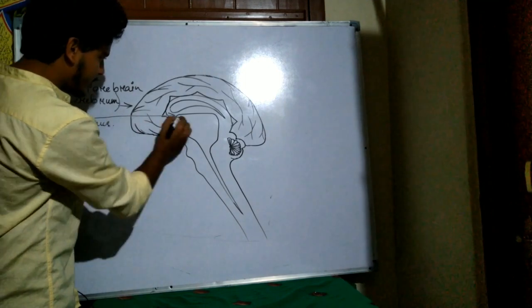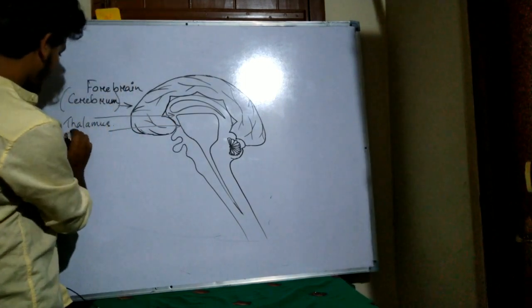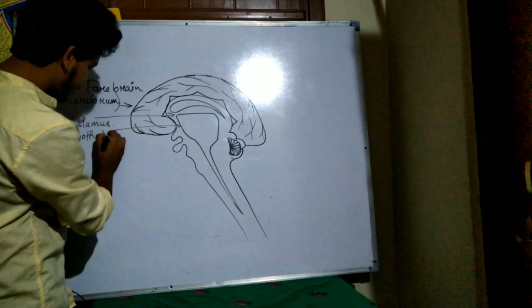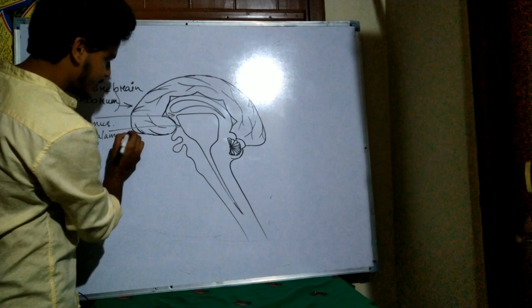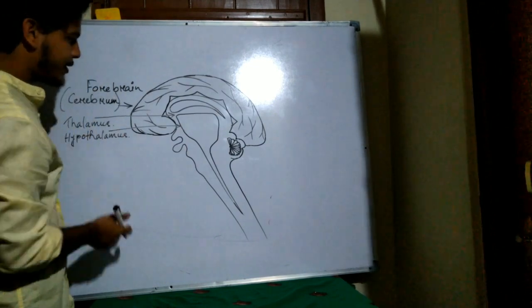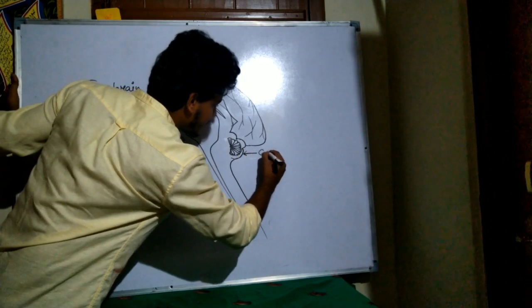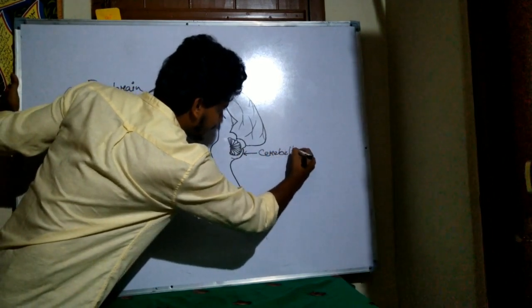And just below the thalamus we have hypothalamus. So these are the parts of midbrain. And then we will see in the hindbrain, this is cerebellum.